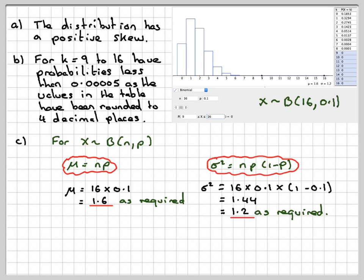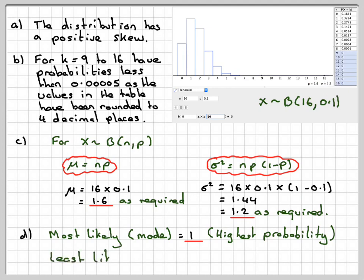Now, the most likely value is going to be the one with the highest probability, which is going to be this one, which is 1. So the most likely, and that's also called the mode, is equal to 1, the highest probability. Now, even though these are all recorded as 0 in the table, 16 will be the lowest probability. So the least likely to happen will be 16.